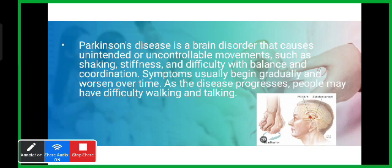There are two types of neurotransmitters: the excitatory neurotransmitter, acetylcholine, which excites movement, and the inhibitory neurotransmitter, dopamine, which controls movement. When dopaminergic neurons degenerate, uncontrolled movement starts.